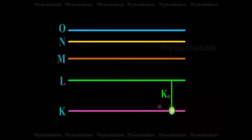Suppose the electron from M-shell jumps to the K-shell, it gives out K-beta line and so on.